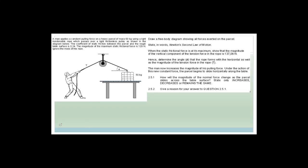A man applies a constant pulling force on a heavy parcel of mass 50 kg using a light, inextensible rope which passes over a light, frictionless pulley. Inextensible means it's not stretchy, and a frictionless pulley means it provides no additional forces. The coefficient of static friction between the parcel and the rough table surface is 0.34, and the maximum frictional force is 120 newtons.